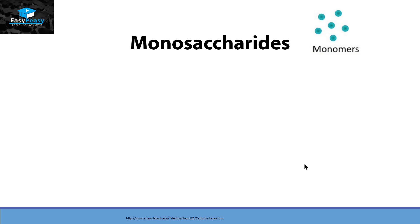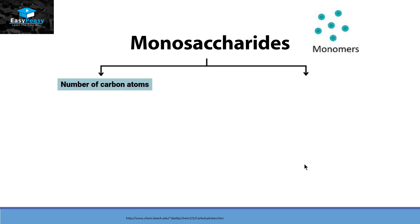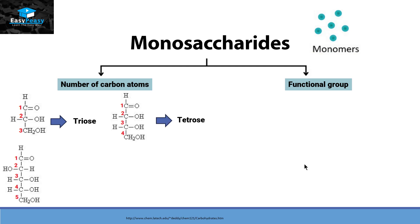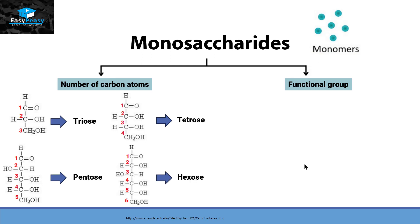Monosaccharides can be classified further into two categories. One is on the basis of the number of carbon atoms present in them, and the second is on the basis of functional unit. If we have three carbon atoms in a saccharide, we call it triose; four carbon atoms, tetrose; five carbon atoms, pentose; and six carbon atoms, hexose.